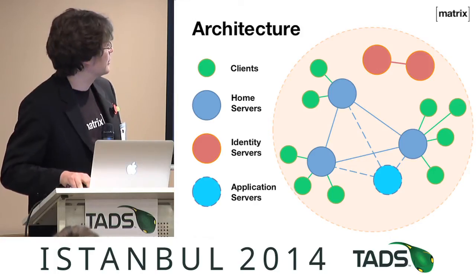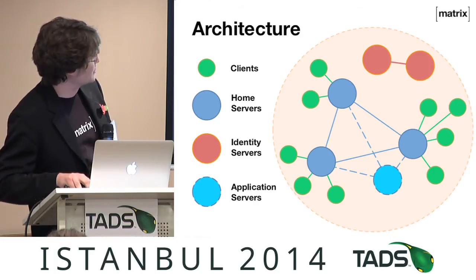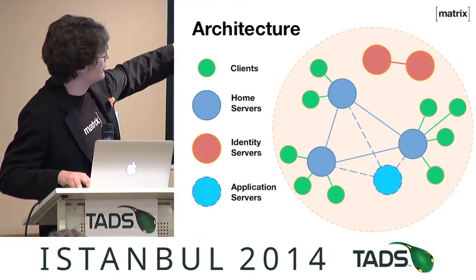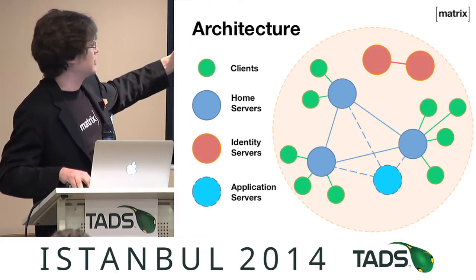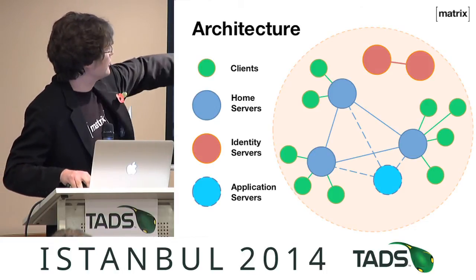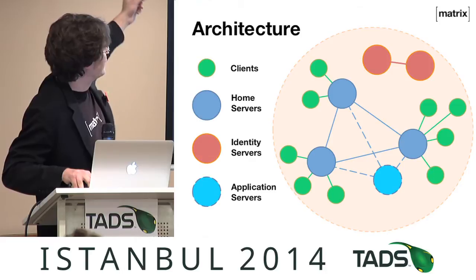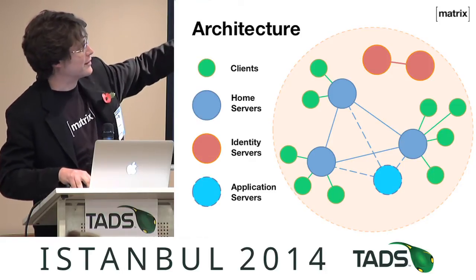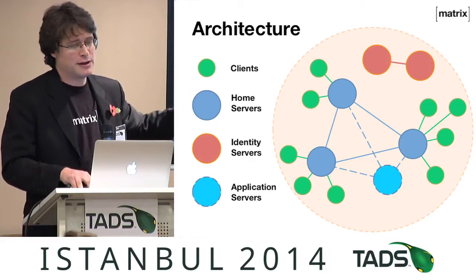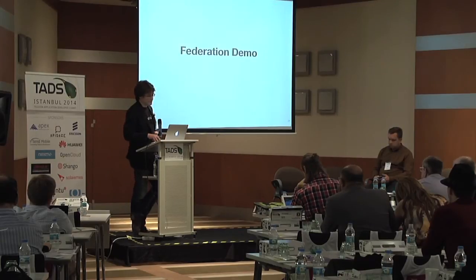The architecture looks a bit like this: you've got a bunch of servers talking to one another out on the internet, just like email servers. Each server has a bunch of clients. We also have identity servers, which are a separate piece that maps your phone number and email address through to your internal Matrix ID.